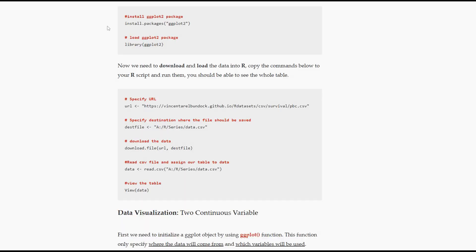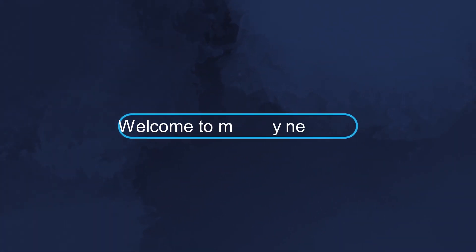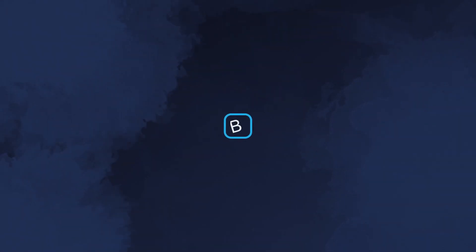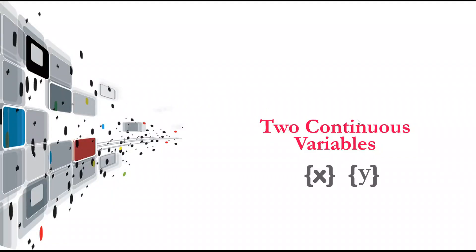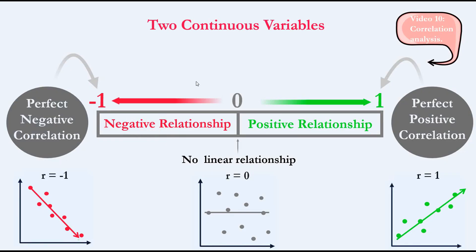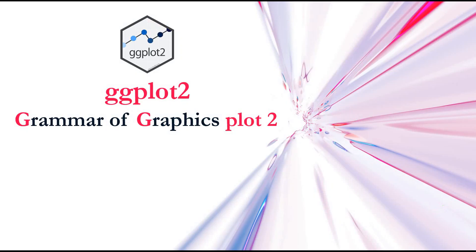So let's start. When you want to visualize two continuous variables, the main reason is we want to find if there is a relationship between these two variables. If there is a positive relationship, meaning one increases and the other increases, the plot goes in this direction. If there is a negative relationship, meaning one increases and the other decreases, the plot goes in that direction. If there is no relationship, you can't find any linear relationship. You can find more about this in my video on correlation analysis.